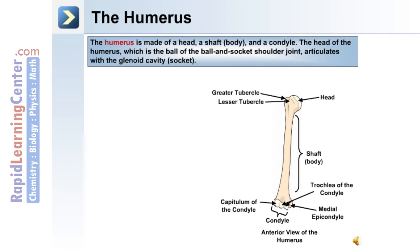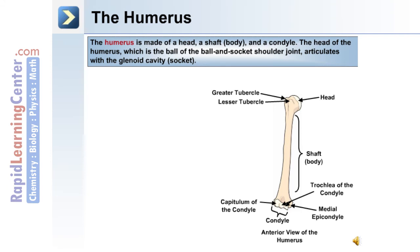Also at the distal end of the humerus is the medial epicondyle. The head of the humerus is the ball of the ball-and-socket shoulder joint, and articulates with the glenoid cavity, which is the socket. On the proximal lateral edge of the humerus is the greater tubercle. This tubercle forms the outer margin of the shoulder, and its smooth impressions serve as attachment points for three muscles: the supraspinatus, the infraspinatus, and the teres minor. These muscles are involved in rotation of the head of the humerus and abduction of the arm at the shoulder.